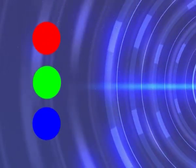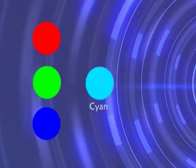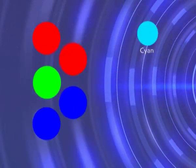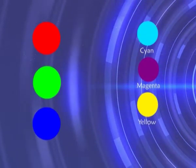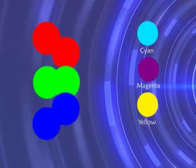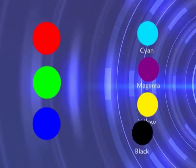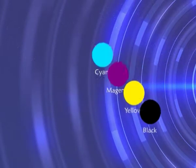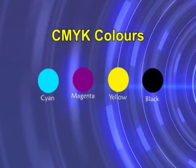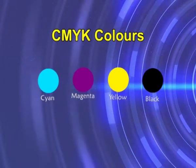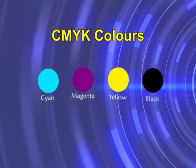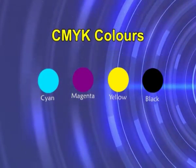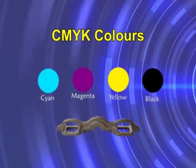Secondary colors. Mixing equal amounts of two primary colors gives secondary colors. Green plus blue gives cyan. Blue plus red gives magenta. And red plus green gives yellow. These colors when combined in equal amounts give black. Hence, these colors are known as CMYK colors. Here, black is called K to avoid confusion with blue, which is a primary color. But originally, the letter K stands for the key plate used in printing.